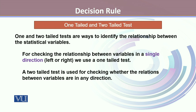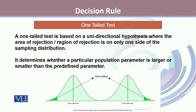One- and two-tailed tests are ways to identify the relationship between statistical variables. For checking the relationship between variables in a single direction — that could be in the right direction or left — we use a one-tailed test. On the other hand, a two-tailed test is used for checking whether the relationship between variables is in any of the directions, either left or right. A one-tailed test is based on a unidirectional hypothesis, where the area of rejection, also called the region of rejection, is on only one side of the sampling distribution.